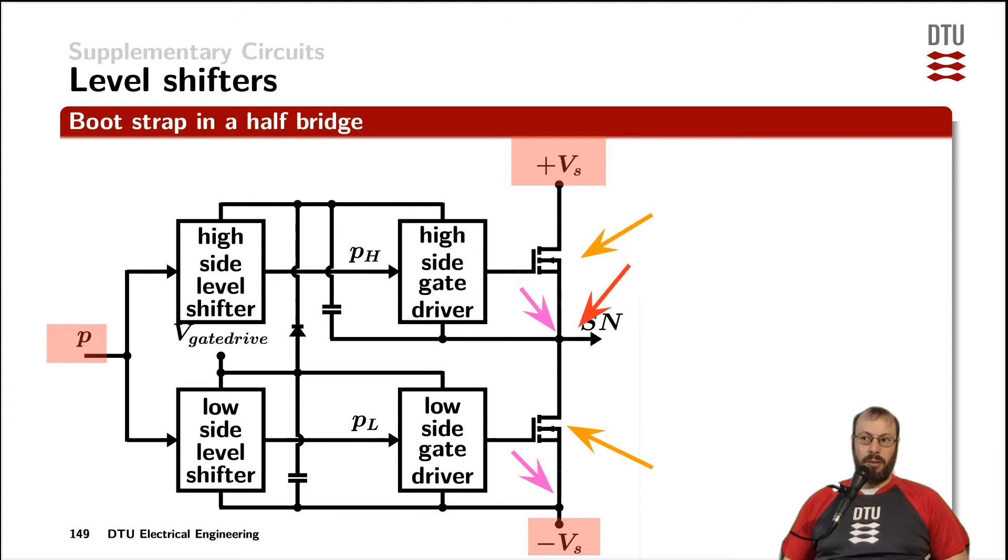But the source voltage of the high side device is a switching node, a node that can be varying from high to low in terms of the power signals. On the other hand, the low side device is referred to a steady state voltage, a DC voltage.